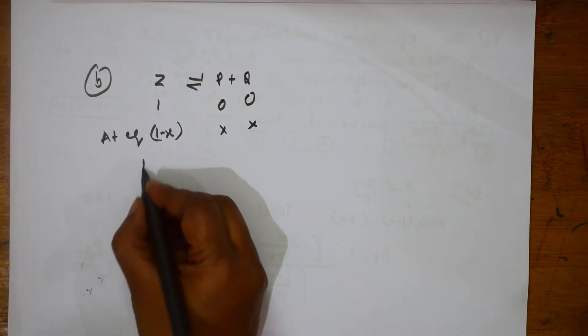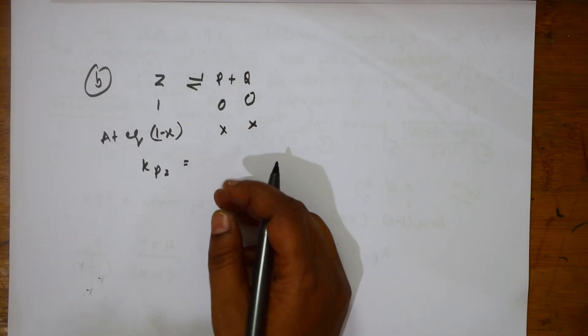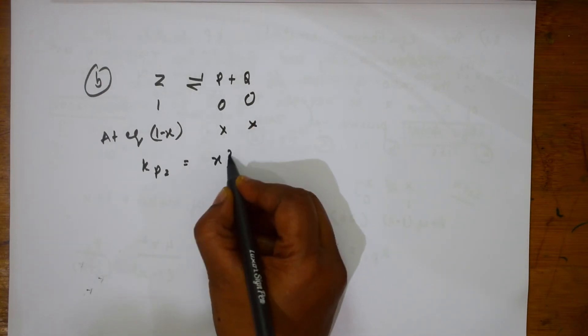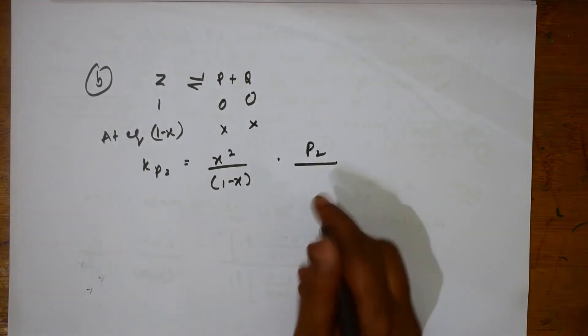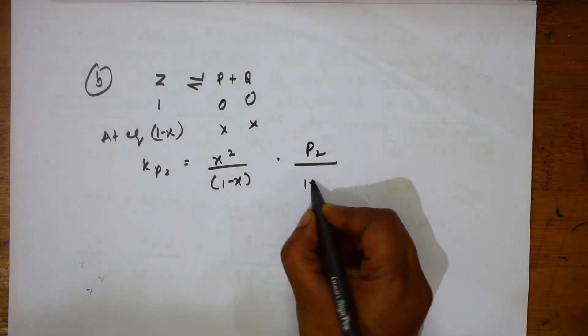Now, let us write Kp2 in terms of partial pressure. The same thing, ratio if I take, X square by 1 minus X into P2 by 1 minus X into P2, the same thing. I derived, I am directly writing it here, 1 plus X.